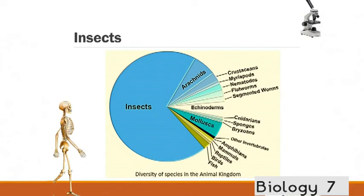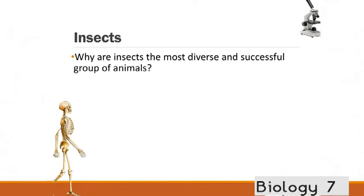So, when you have a look at the diversity of species in the animal kingdom, insects make up a huge proportion of them. About almost three quarters of all animals are insects. You've got arachnids there, which are the spiders. If you include spiders, yeah, it's about three quarters. So, a huge, huge diversity and abundance around the world.